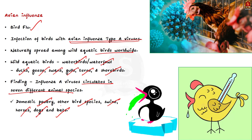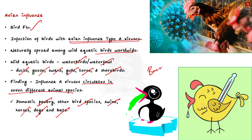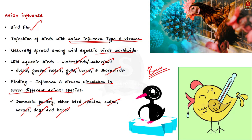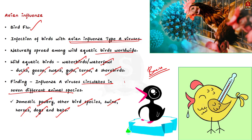That covers the basics of avian influenza, also known as bird flu. Now, coming to the types — there are four types of influenza virus: type A, B, C, and D.